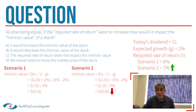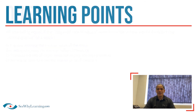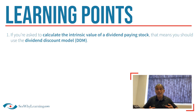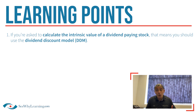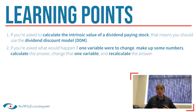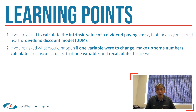So let's go ahead and select answer B — and of course we are correct. To recap, here are the two learning points from this video. Number one: if you're asked to calculate the intrinsic value of a dividend-paying stock, that's code for use the dividend discount model. Number two: if you're asked what would happen if one variable were to change, simply make up some numbers, calculate the answer, change that one variable, recalculate, and you'll see exactly what would happen.